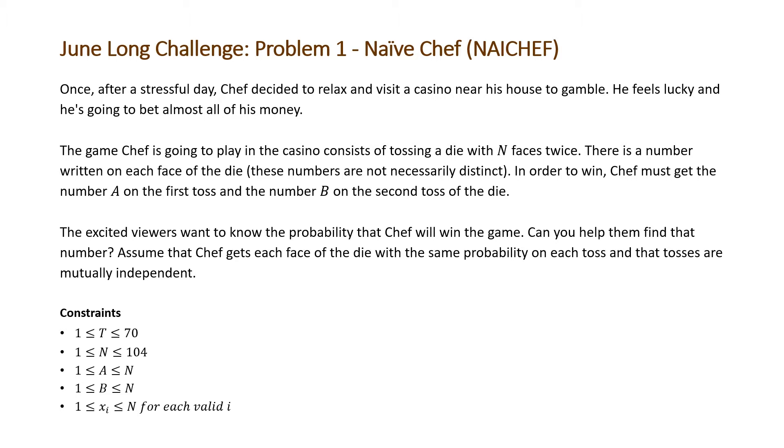These numbers are not necessarily distinct. In order to win, Chef must get the number A on the first toss and the number B on the second toss of the die. The excited viewers want to know the probability that Chef can win the game. Can you help them find that number? Assume that Chef gets each face of the die with the same probability on each toss and that tosses are mutually independent.